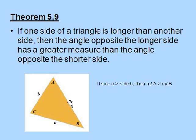So, in this triangle here, if we say that side a is greater than side b, then the measure of angle A will be greater than the measure of angle B.